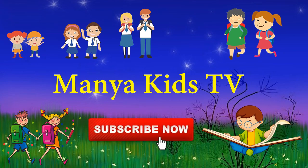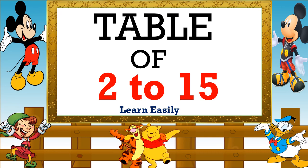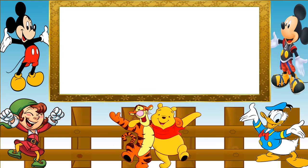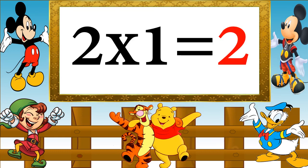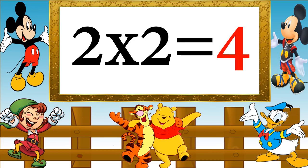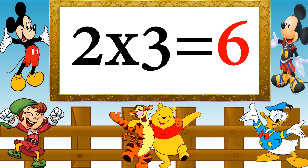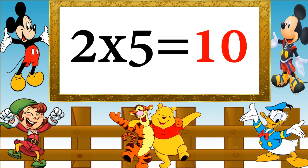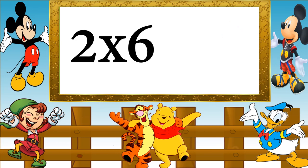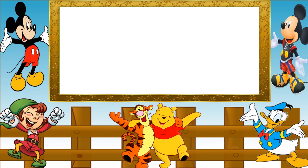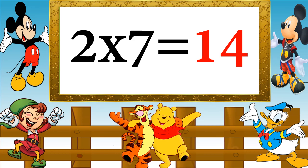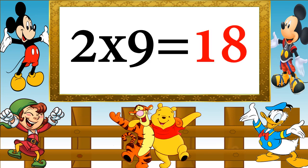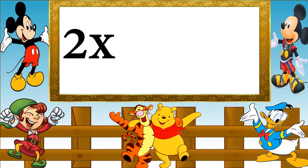Mania Kids TV. Table of 2 to 15. Table of 2. 2 ones are 2, 2 twos are 4, 2 threes are 6, 2 fours are 8, 2 fives are 10, 2 sixes are 12, 2 sevens are 14, 2 eights are 16, 2 nines are 18, 2 tens are 20.